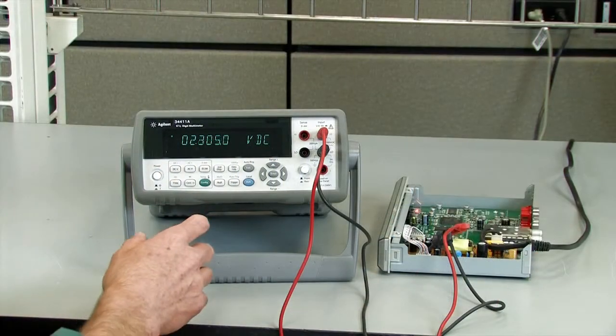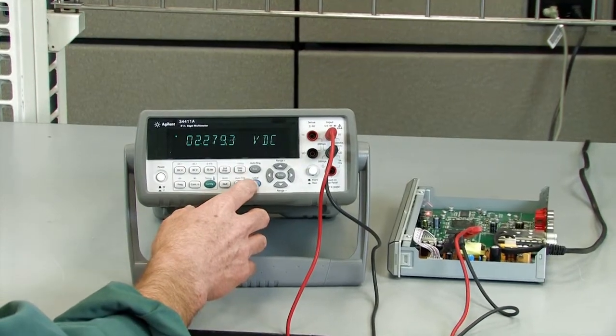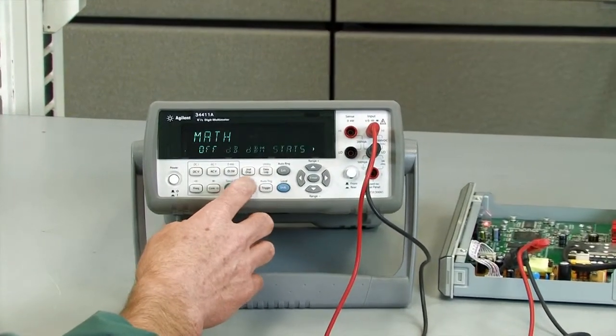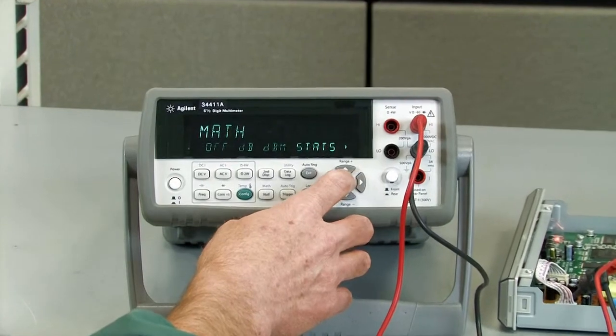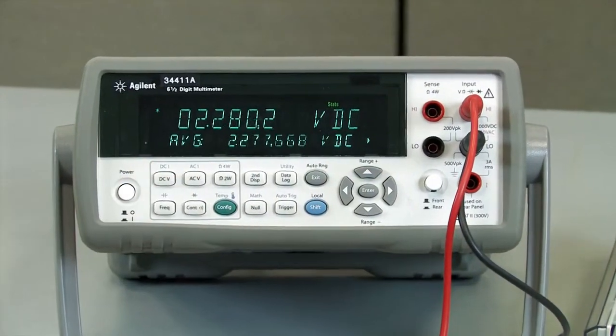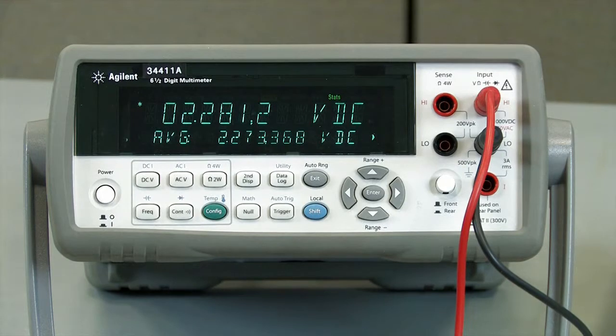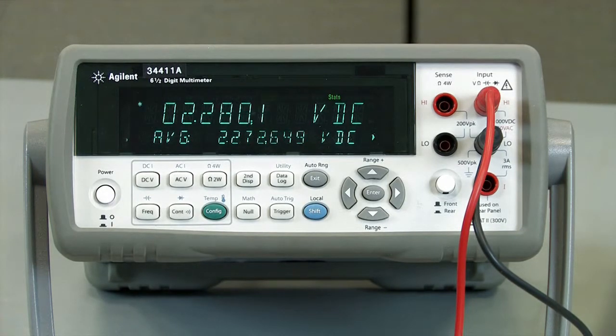Let's get started with our DC measurement. The first method is to take a bunch of DC measurements. So I'm going to go ahead and turn on math statistics and look at the average. The average becomes more and more stable with the number of readings being taken. So to get a 10x reduction in noise, we need to take 100 readings.